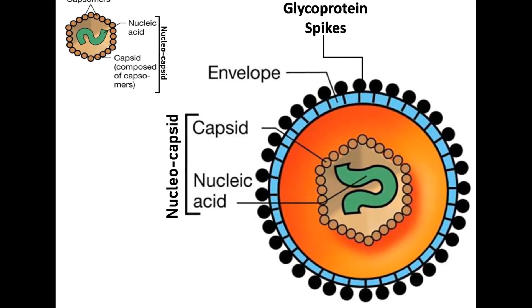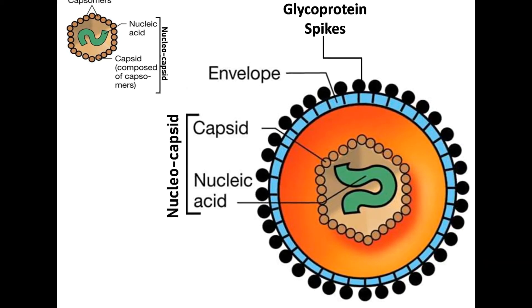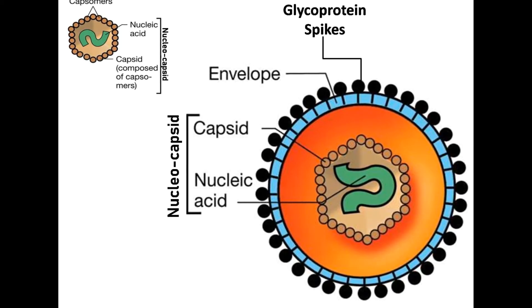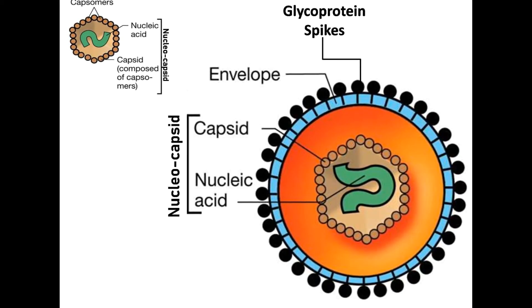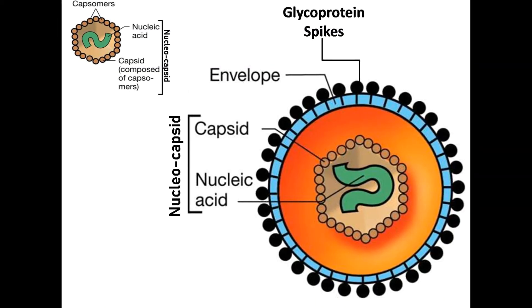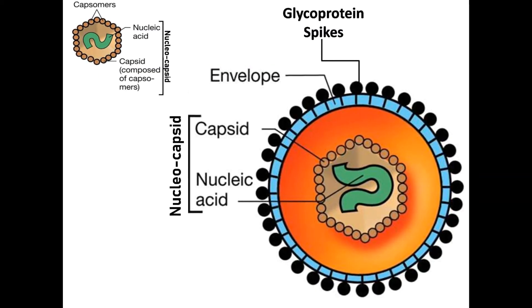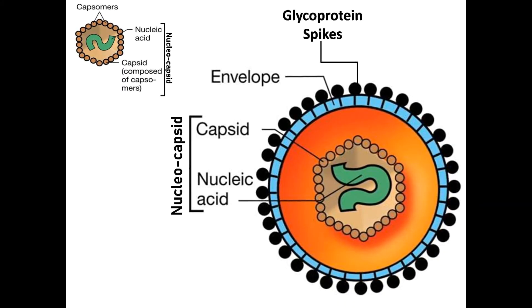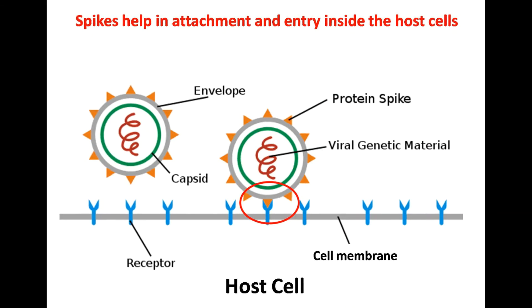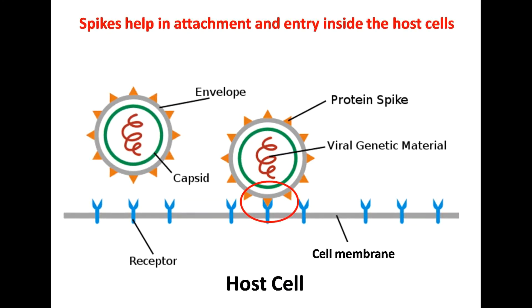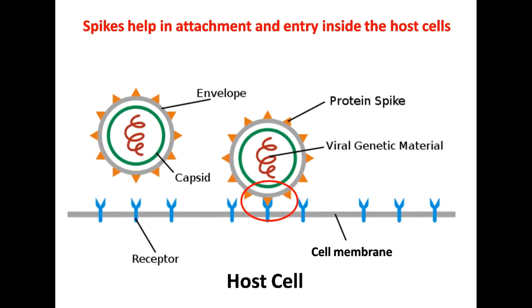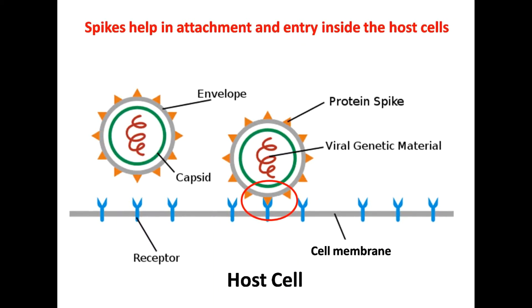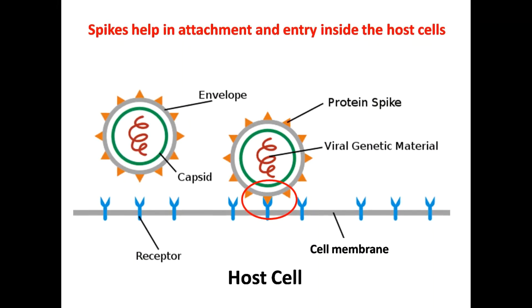The envelope is mostly found in animal and human viruses, and it is acquired from the host cell membrane during the exit of viruses from the host cells. Some viruses may also contain glycoproteins known as spikes. These viral proteins serve many purposes — they make the attachment of viruses to their host cells easier and help their entry into them.